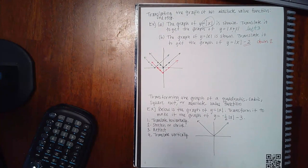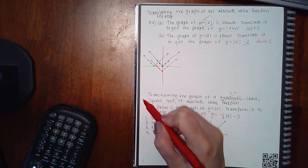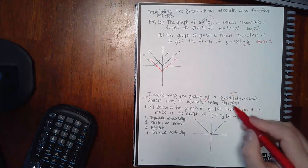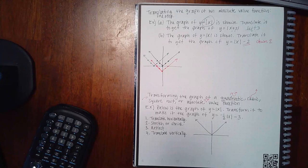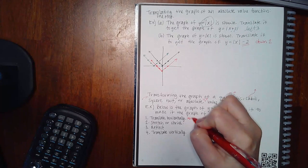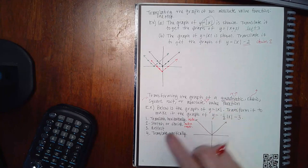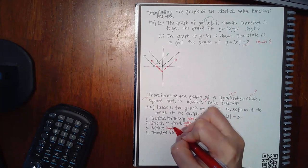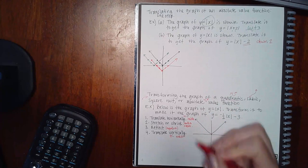Here's another topic: transforming the graph of a quadratic, cubic, square root, or absolute value. The parent function can be a quadratic (a parabola), a square root, an absolute value (a V shape), or a cubic. Those are the basic shapes. The order of transformations is: first translate horizontally — look at what's inside the function; then stretch or shrink — what's multiplied on the outside; then reflect — depending on negatives; then translate vertically — what you add or subtract on the outside.